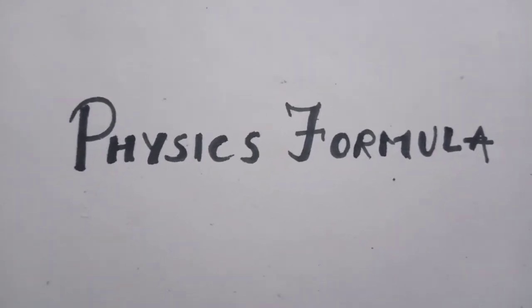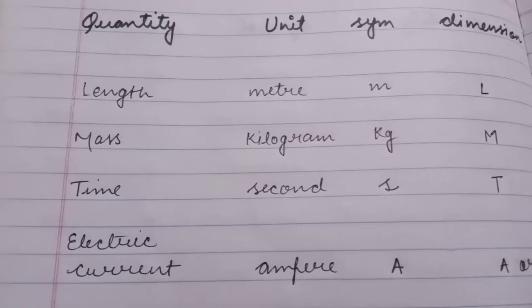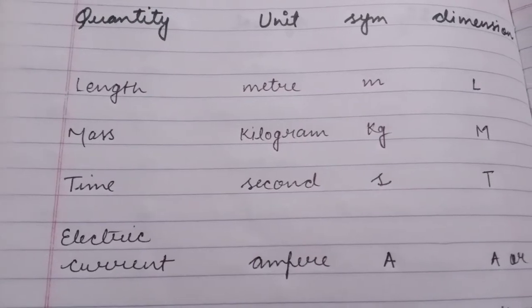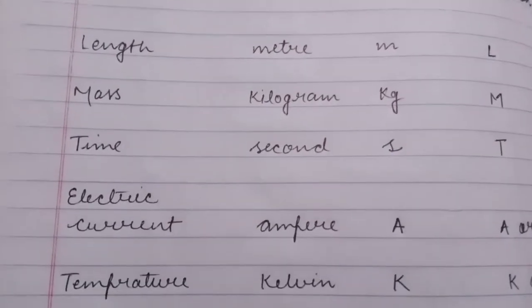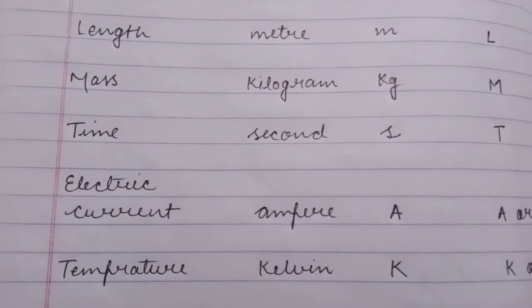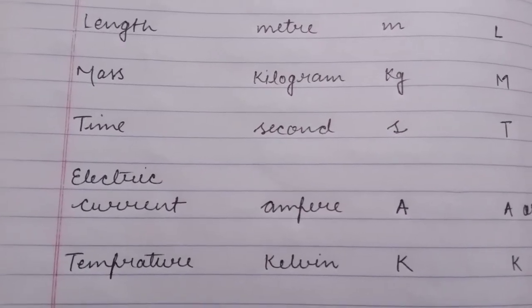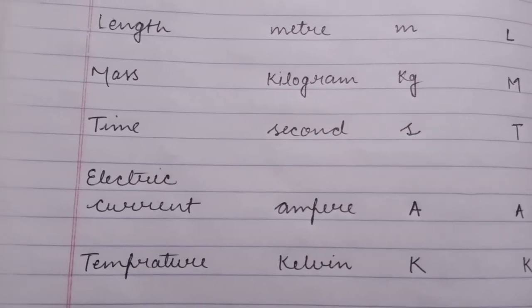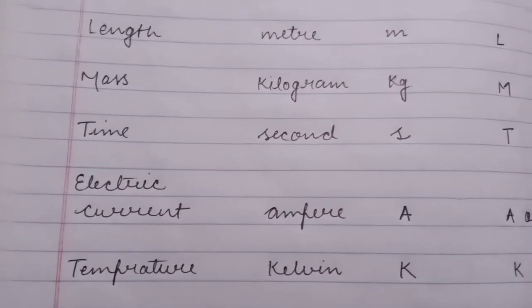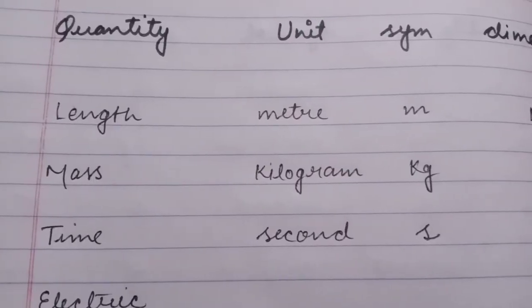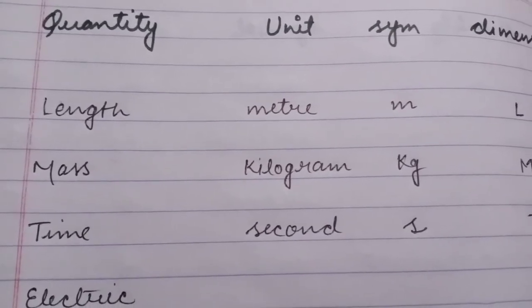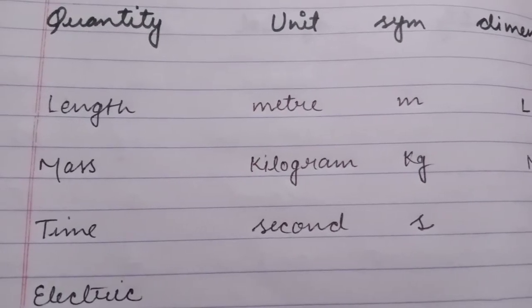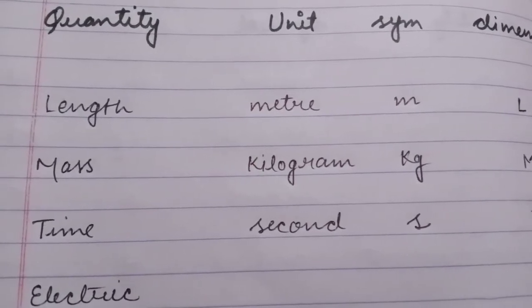There are seven fundamental units: mass, length, time, temperature, electric current, luminous intensity, and amount of substance. There are also two supplementary units — plain angle and solid angle. We will focus on the fundamental units.